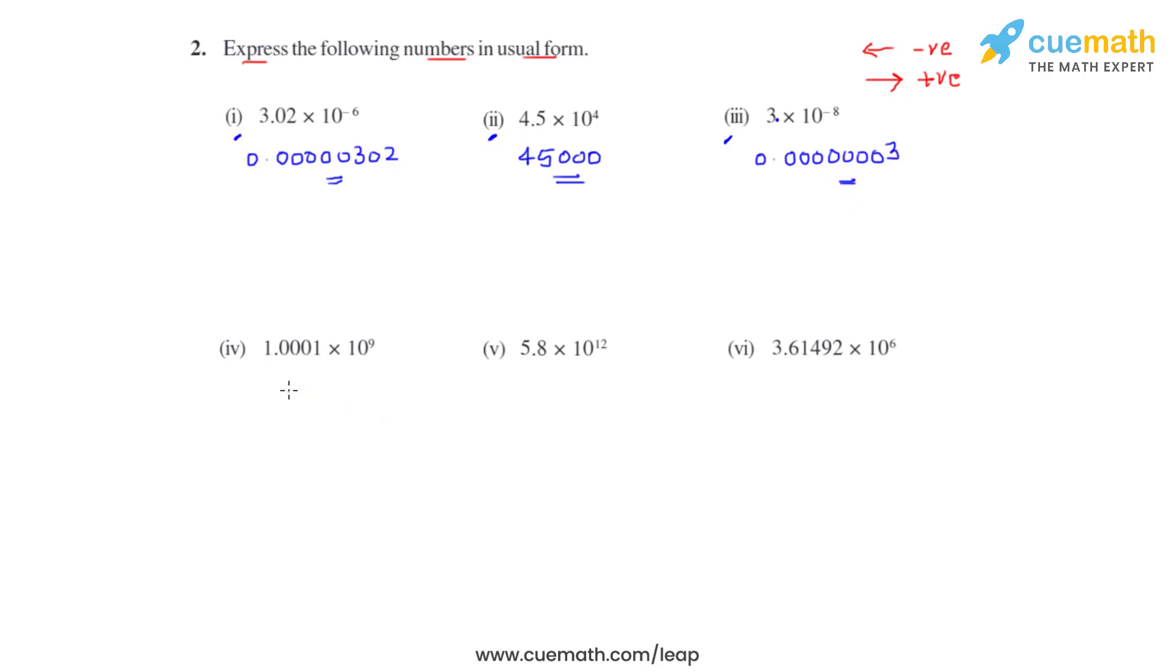Likewise, we'll have to do for the rest of the bits, so let's go on to the fourth bit. In the fourth bit, we have the power of 10 as positive 9. When the power is positive, the decimal moves towards right, so we get our answer as 1,000,000,000. This is the usual form for the number in the fourth bit.